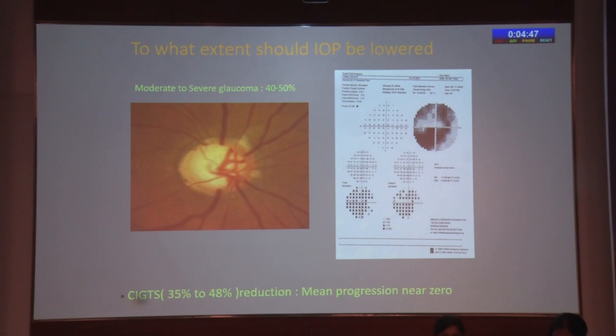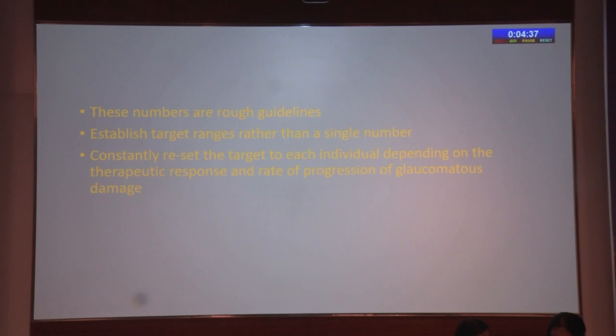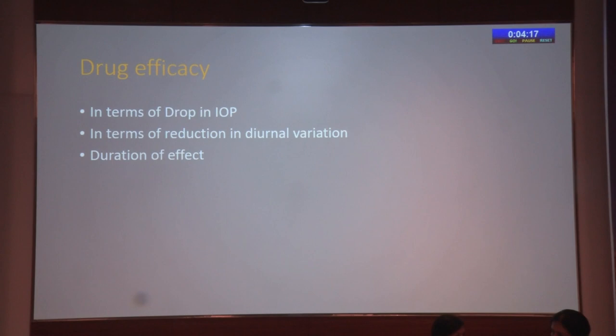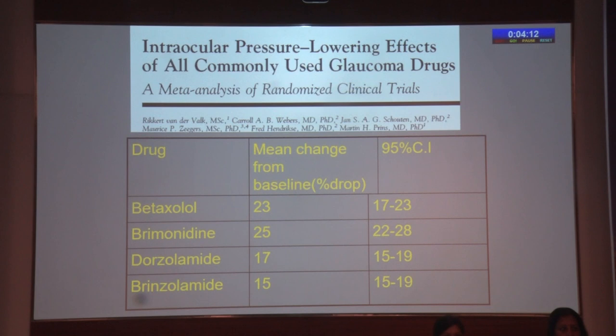The Collaborative Initial Glaucoma Treatment Trial showed that 35% to 48% reduction in moderate and severe glaucoma brought mean progression to almost zero during follow-up. These numbers are rough guidelines. Establish target ranges rather than a single number, and constantly reset the target for each individual depending on the therapeutic response and the rate of progression of glaucomatous damage. A meta-analysis looks at the IOP-lowering effects of individual drugs.